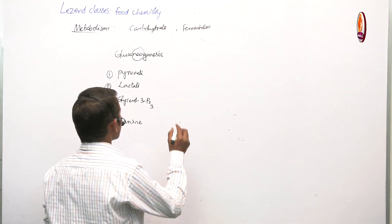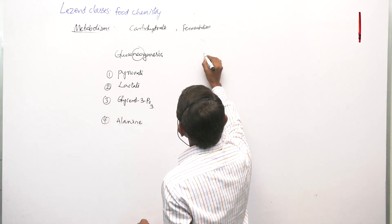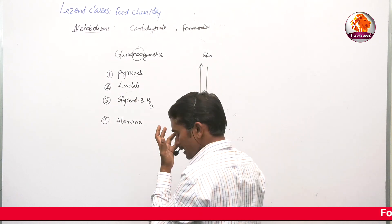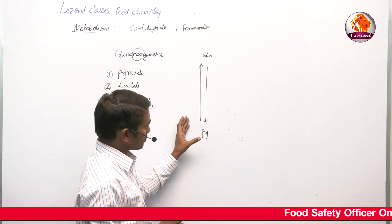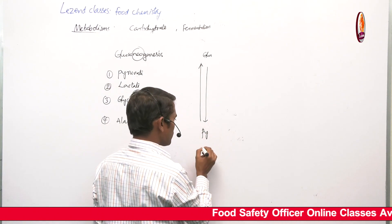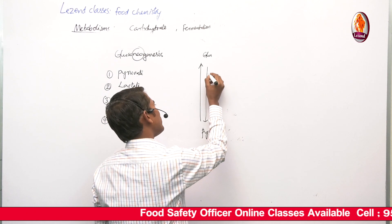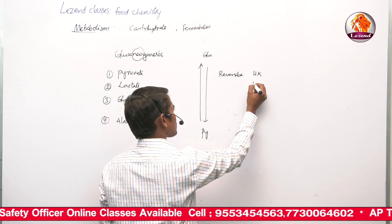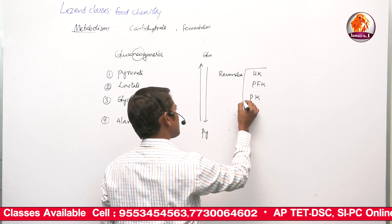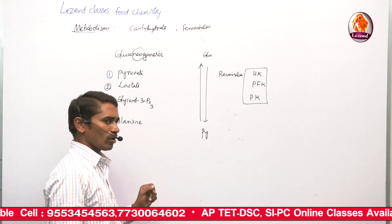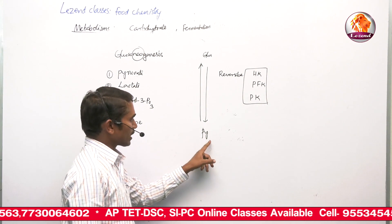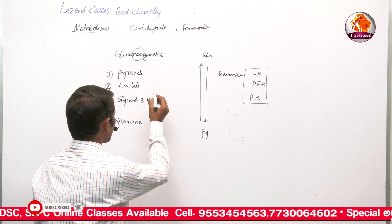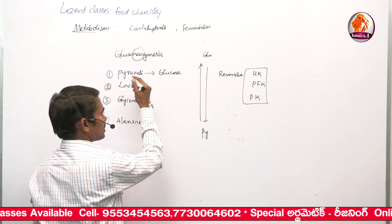Pyruvate, as explained, is the end product of glucose. The reverse of this — pyruvate reverting back into glucose — requires involvement of some enzymes and shuttles. Almost every reaction in glycolysis is reversible, except those catalyzed by hexokinase, phosphofructokinase, and pyruvate kinase. All other glycolysis reactions are reversible, so pyruvate can revert back into glucose, increasing blood glucose levels.